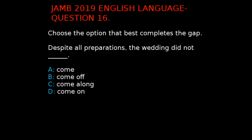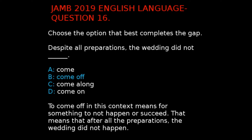Jan 2019 English Language Question 16. The question says, 'Despite all preparations, the wedding did not dash.' The options are: A. Come, B. Come off, C. Come along, D. Come on. The correct answer is B. Come off, because to 'come off' in this context means for something to not happen or succeed — that is, after all the preparation, the wedding did not happen.